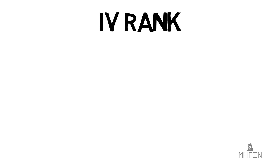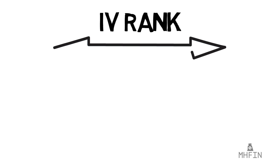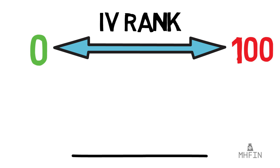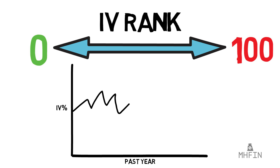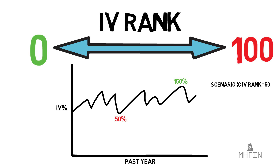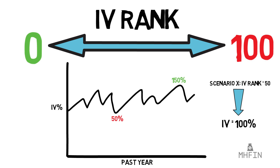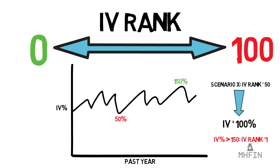Let's start with IV rank. This measurement ranges from 0 to 100, analyzing the high and low IV point over a certain timeframe — usually one year. For example, if an underlying had an all-time low IV of 50% and an all-time high IV of 150% over the past year, an IV rank of 50 would mean the IV is currently at 100%. If the current IV was above 150%, the rank would be 100; if it was below 50%, the rank would be 0.